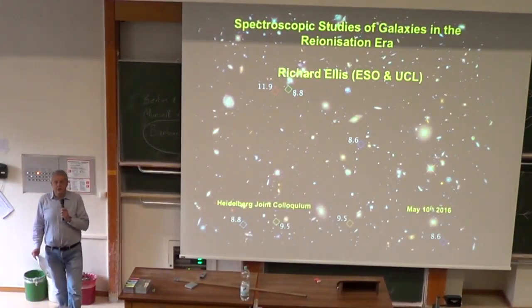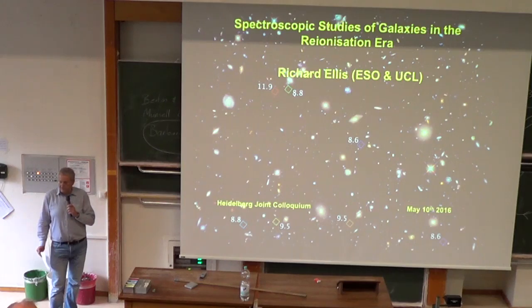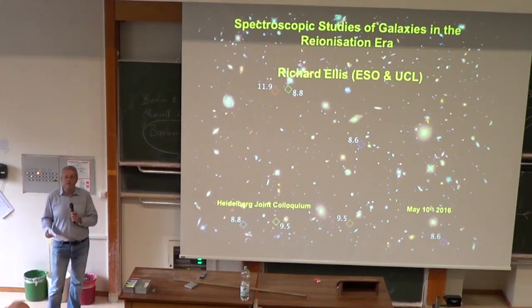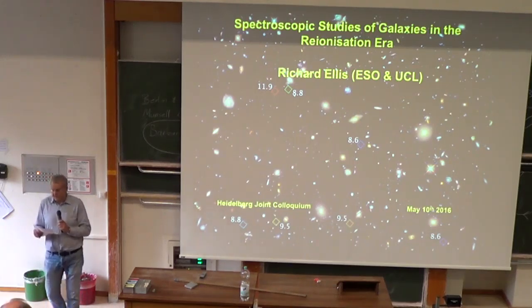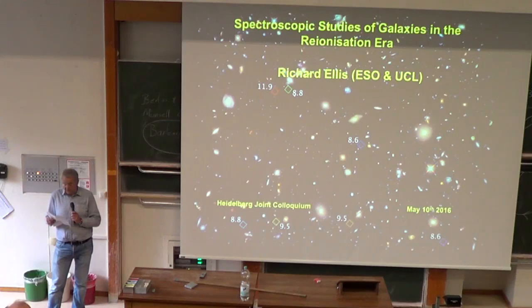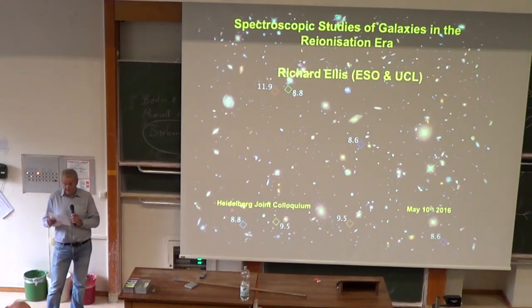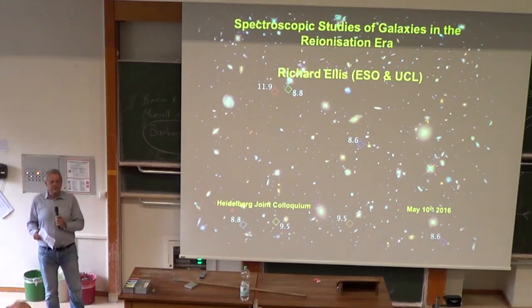Welcome everybody to our joint historical colloquium. My name is Stefan Jordan and it's a great pleasure for me to introduce our today's speaker, Professor Richard Ellis. Professor Ellis got his PhD in 1974 and since September 2015 he is a professor at University College London, now on leave as a senior scientist at ESO in Garching. Before he was a professor in Darwin, Cambridge, and Caltech.